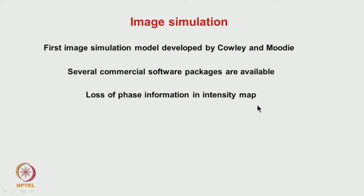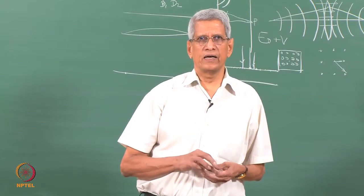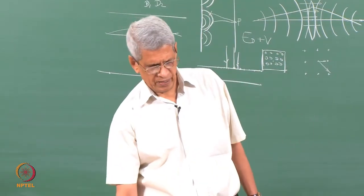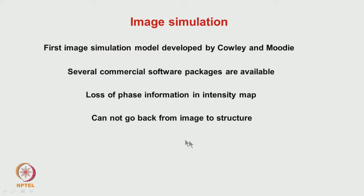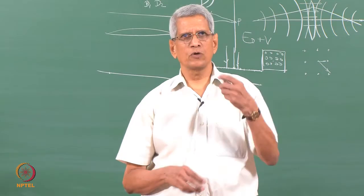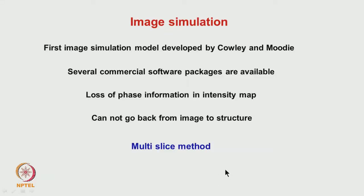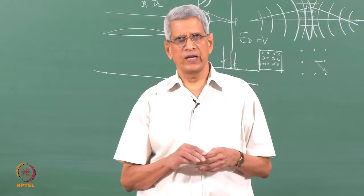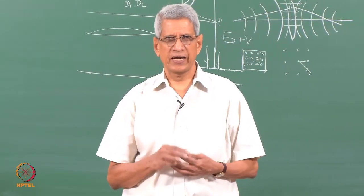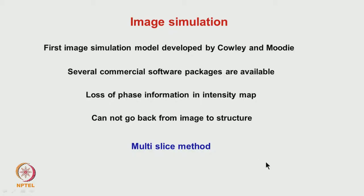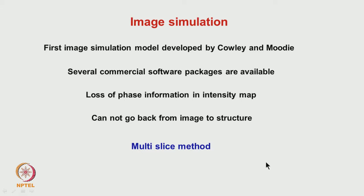The major problem with high resolution dot contrast is that the phase information is lost when intensity mapping takes place. We cannot go back from the image intensity to the structure. To get structural information we must assume some model of the structure and then use the multi-slice method to find out the phase and amplitude.